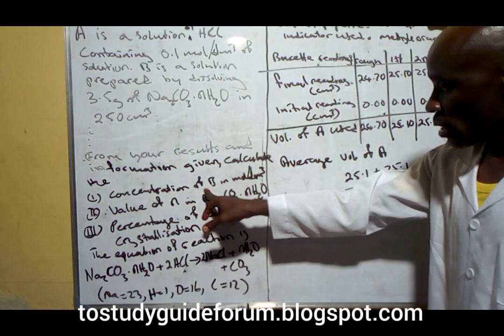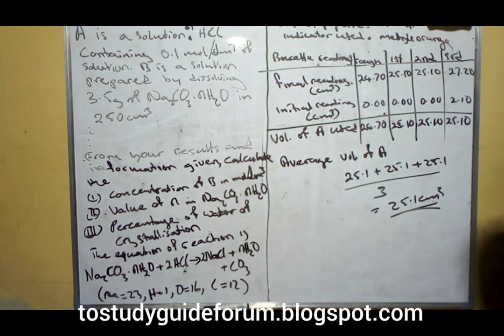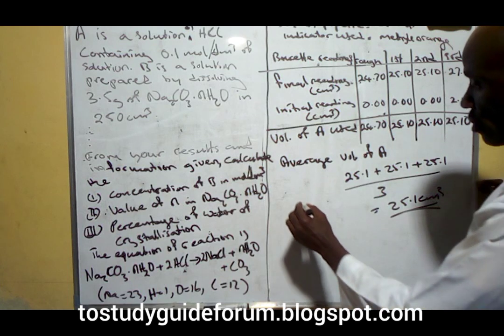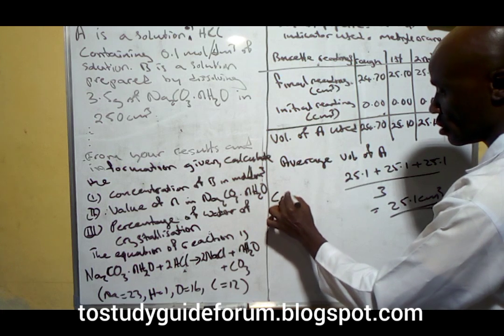The first thing we do is calculate the concentration in B in mole per dm³. We are going to use this relation.